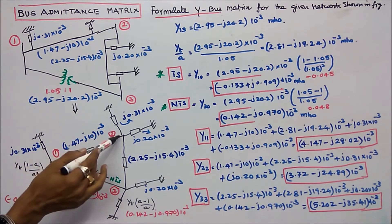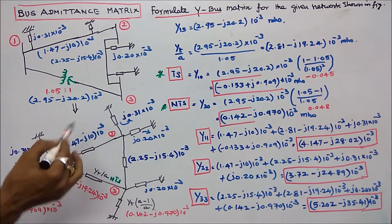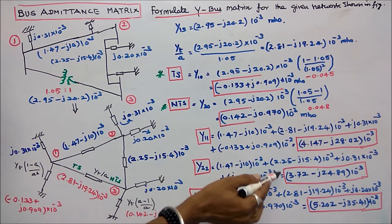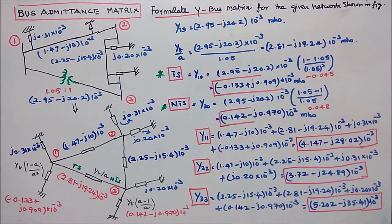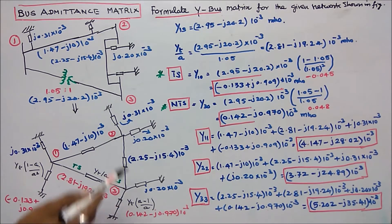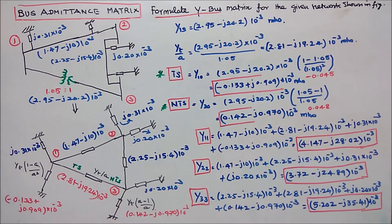For y22, four elements are connected and their sum gives y22 equal to 3.72 minus j24.89 into 10 power minus 3. For y33, four elements are connected and the sum gives y33 equal to 5.202 minus j35.41 into 10 power minus 3.